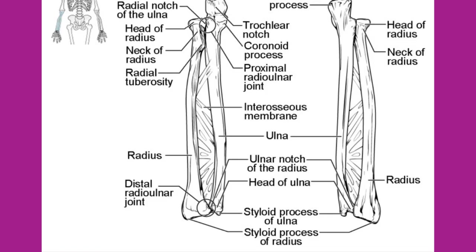The radius runs parallel to the ulna on the lateral or thumb side of the forearm. The head of the radius is a disc-shaped structure that forms the proximal end. The small depression on the surface of the head articulates with the capitulum of the humerus as part of the elbow joint, whereas the smooth outer margin of the head articulates with the radial notch of the ulna at the proximal radio-ulnar joint. The neck of the radius is the narrowed region immediately below the expanded head. Inferior to this is the radial tuberosity, an oval-shaped bony protuberance that serves as a muscle attachment point.